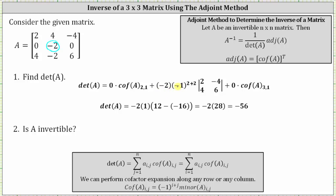We have plus negative two times cofactor two comma two, which is equal to negative one raised to the power of two plus two. The exponent is two plus two because the element is in row two, column two. Then we have times the minor. The minor is equal to the determinant of the matrix formed after eliminating row two and column two, leaving us with a two by two determinant where row one is two, negative four, and row two is four, six.